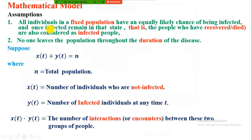Assumptions: All individuals in a fixed population have an equally likely chance of being infected and once infected remain in that state. That is, the people who have recovered or passed away are also considered as infected people. This is one assumption.